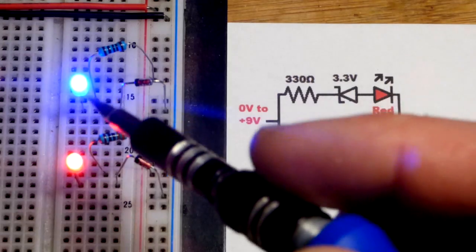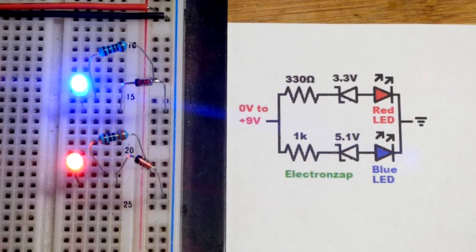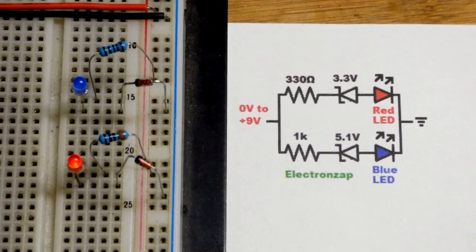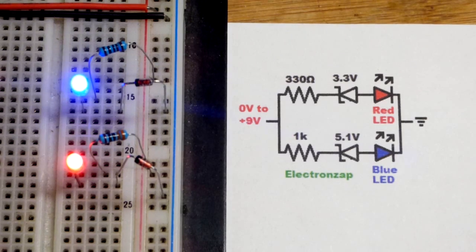And so you do get a trickle of current at lower voltages. Which isn't all bad if you like that effect where it fades down and fades back up as the voltage changes.